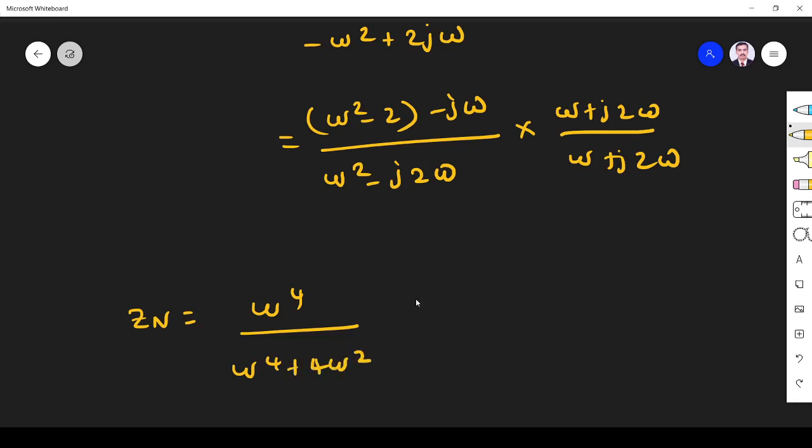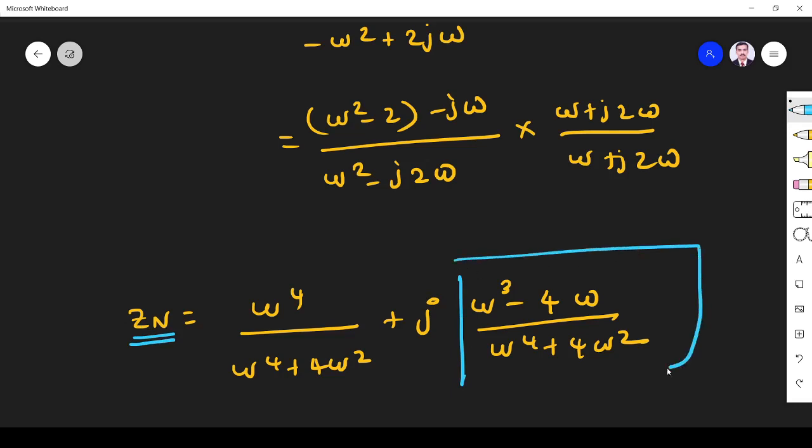...ω⁴ + 4ω². I split the real and imaginary parts of the result, so (ω³ - 4ω)/(ω⁴ + 4ω²). In the starting stage itself, I told that Z_N is purely resistive, so the imaginary part is zero because the imaginary part is the reactive part.